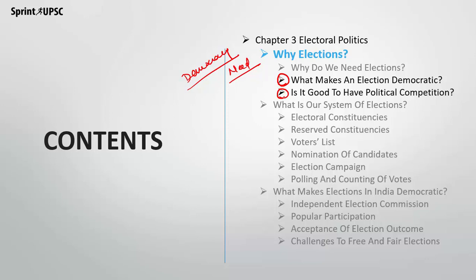In the next session, we will cover our election system — what are electoral constituencies, reserved constituencies, the voter list, nomination process, candidates, campaign, polling and counting, and voting. All these things will be discussed in the upcoming session.